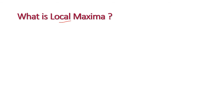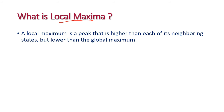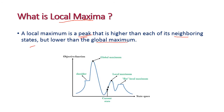The next question is: what is local maxima? Local maxima is an important component in hill climbing. It is a peak that is higher than each of its neighboring states but lower than the global maximum. In the hill climbing diagram, our local maximum is located at a certain point, but the global maximum may be somewhere else in the state space. All neighboring values of the local maximum are lower than that state, but the global maximum is placed elsewhere.